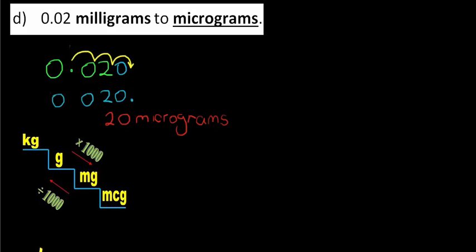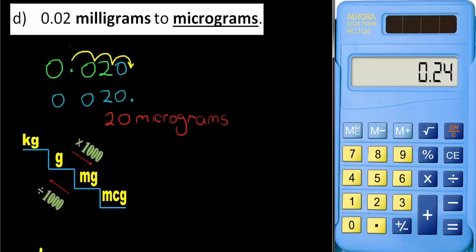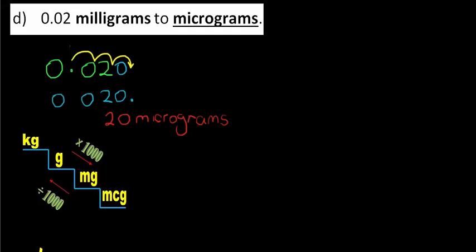When you're writing micrograms in a final answer you're not allowed to use the old-fashioned mcg abbreviations so I've written that as micrograms fully. Okay final check on the calculator, clear it. 0.02 milligrams to micrograms I'm going downstairs that's times a thousand equals 20, they put a little dot after the 20 there but it simply is the same as 20 micrograms.